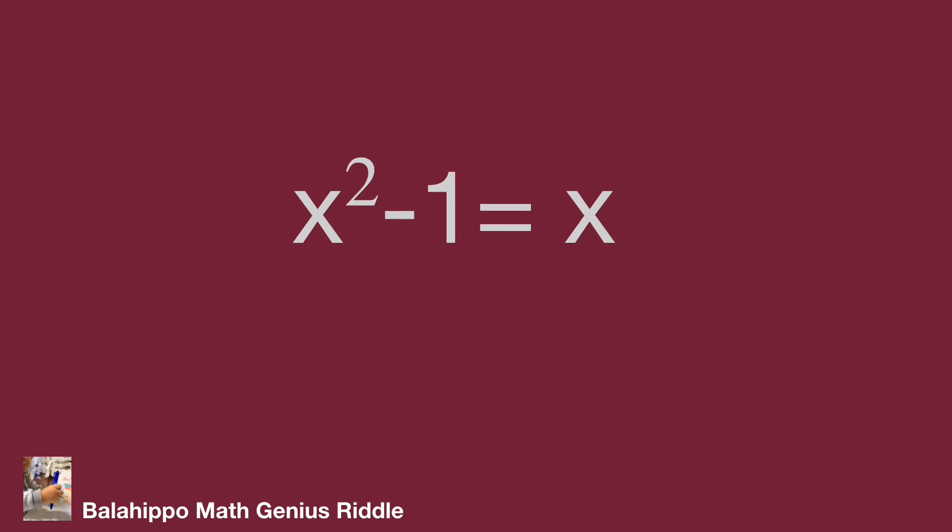Then move all items to the same side of the equation. Finally get x squared minus x minus 1 equals 0.